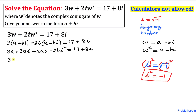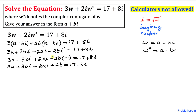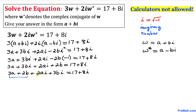So this can be written as 3a plus 3bi plus 2ai minus 2b times i squared, and substituting i squared equals negative 1 gives 3a plus 3bi plus 2ai minus 2b times (negative 1) equal to 17 plus 8i. Multiplying negative times negative gives positive 2b. Now let's rearrange: the real terms 3a and 2b go together, and the imaginary terms 3bi and 2ai go together.